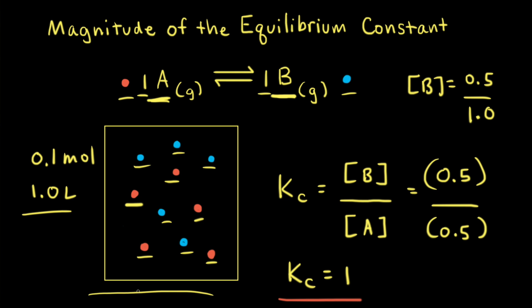We saw in our particulate diagram that at equilibrium we have equal amounts of reactants and products. Therefore, just by knowing the value for the equilibrium constant, we know about the relative amounts of reactants and products at equilibrium.